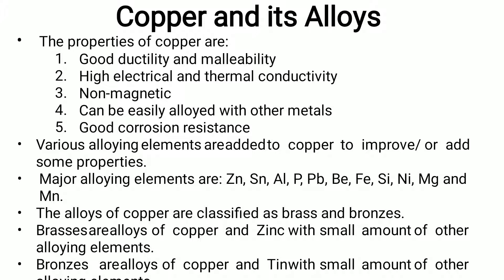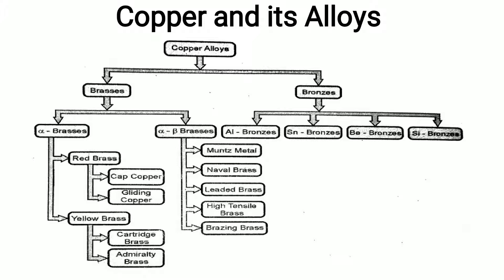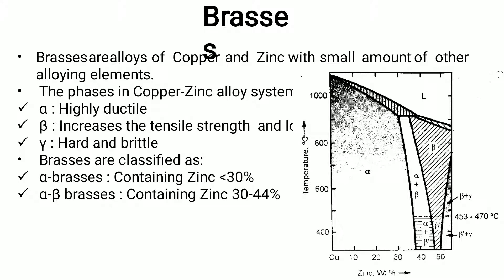Bronzes are alloys of copper and tin with small amounts of alloying elements. The figure shows the types of copper alloys — basically brasses and bronzes. Brasses are alloys of copper and zinc. The phases in the copper-zinc alloy system are: alpha, which is a highly ductile phase; beta, which increases tensile strength; and gamma, which is hard and brittle.